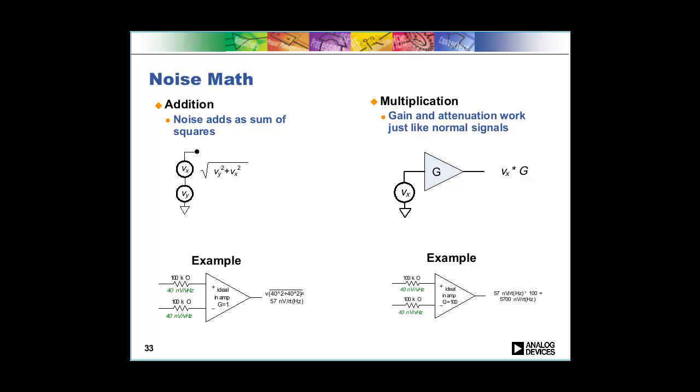We've got a little example here of two 100 kilohm resistors, each of those have 40 nanovolts root hertz. If you're running those into an ideal instrumentation amplifier, a noiseless instrumentation amplifier, then what you do is square each of those 40 nanovolts root hertz, add them together, and then take the square root and you get 57 for the total.